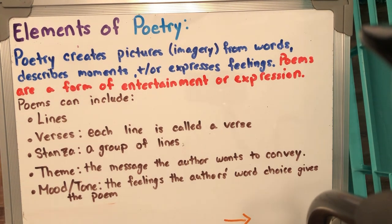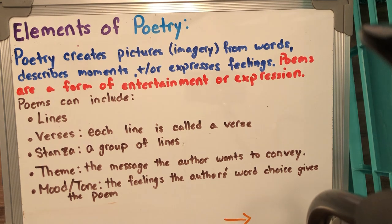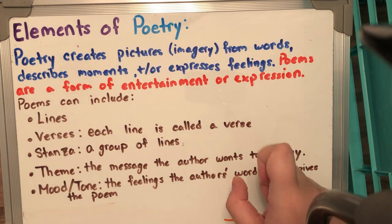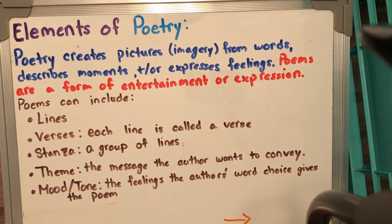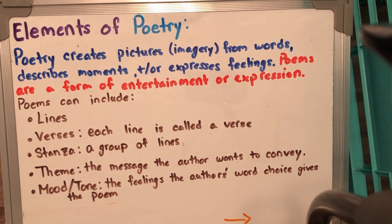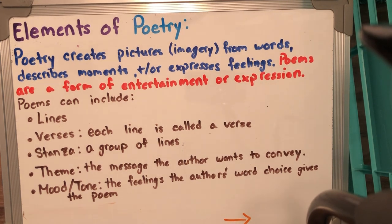Poems can include lines, which are just one line of writing. Verses — each line is called a verse, so if I had seven lines, each line would be called a verse. Now each line I can clump together and call a stanza — it's a group of lines. Usually poems have a theme, which is the message that the author wants to convey to us. And poetry usually has mood or tone, which is the feeling created by the author's word choices. It's really all about precise word choice in poetry.